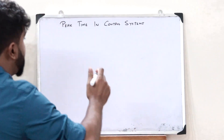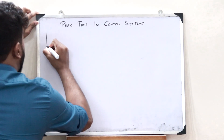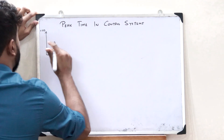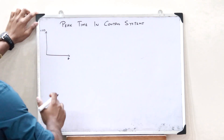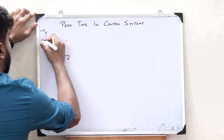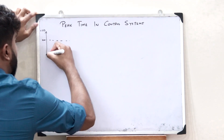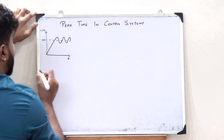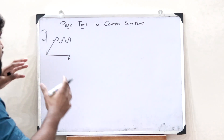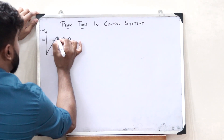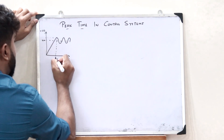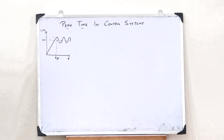When we plot the response diagram of a particular control system, we get something like this. If this is the response along the y-axis and time along the x-axis, and if this is 100% of its value, the response diagram would look something like this. Therefore, the peak time is the amount of time taken for the purpose of reaching the peak value, which is here. This is the peak time in the case of a control system.